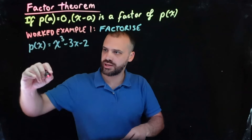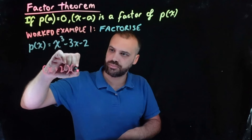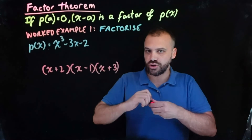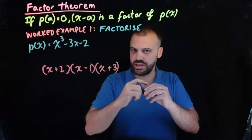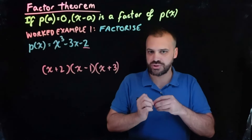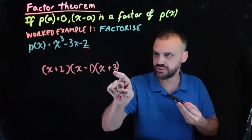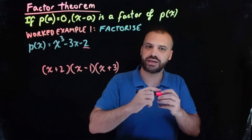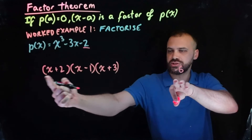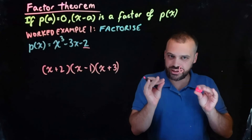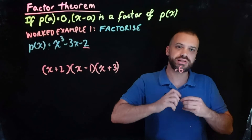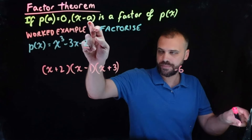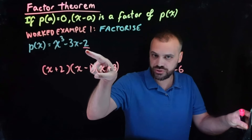Because eventually, when we factorize this, we're going to end up with something times something times something, right? And the constant term comes from multiplying the constant values together. So this is not the factorization of that, but what I'm trying to tell you is that we can make good guesses at what a might be by looking at the factors of our constant term.